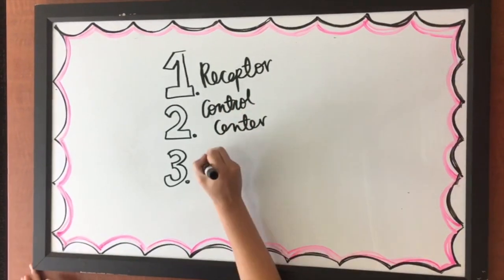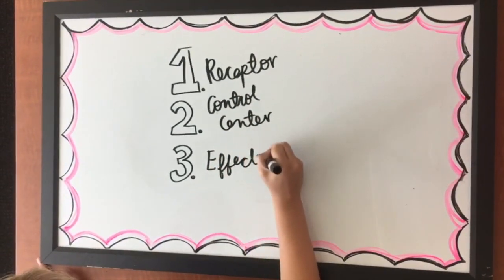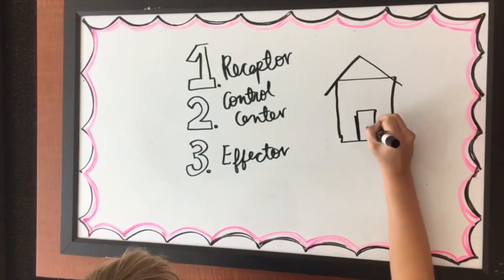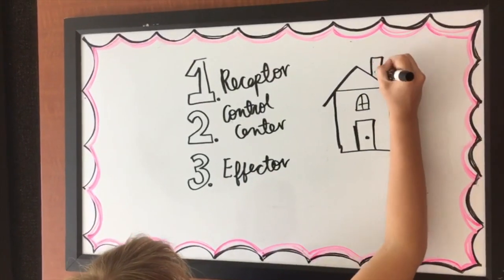The receptor detects a change in a certain condition of the organism's internal environment. The control center interprets this information from the receptor, and through the effector, it responds to the situation.